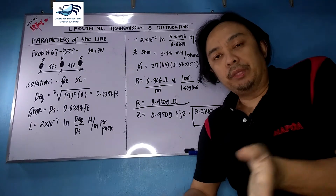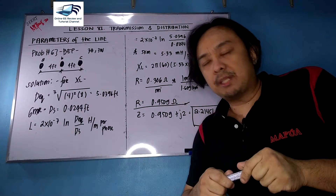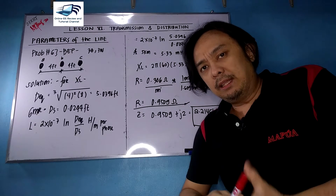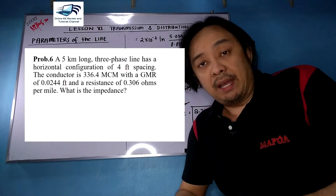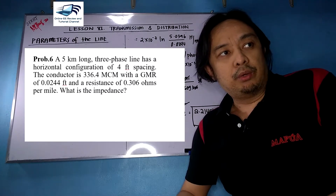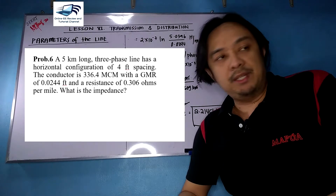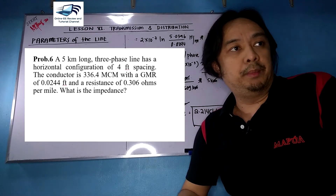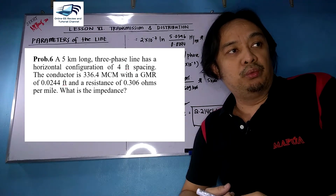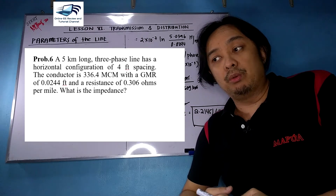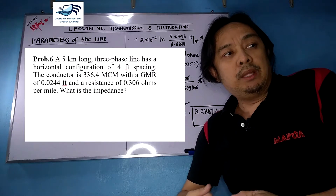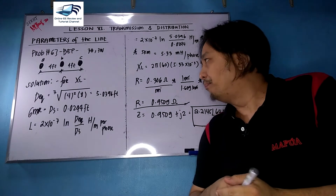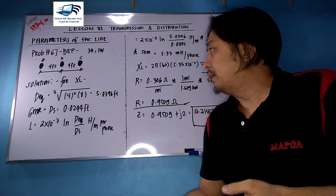We continue with problem number six on parameters of the line. A five-kilometer long three-phase transmission line has a horizontal configuration with four-feet spacing. The conductor has 336.4 MCM, a GMR of 0.0244 feet, and a resistance of 0.306 ohms per mile. We need to find the impedance of the transmission line — this is a classic board exam problem.